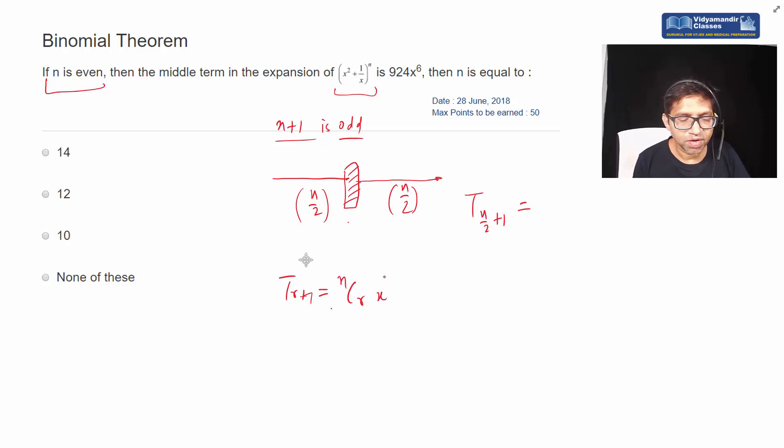nCr x to the power n minus r, y to the power r. This is the formula we will use. r is n by 2, this is according to n here. nCr is n by 2.